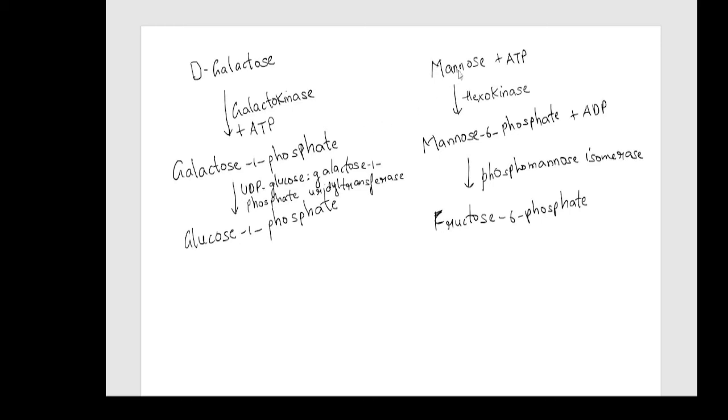Mannose is converted to mannose-6-phosphate by hexokinase and phosphomannose isomerase enzyme converts mannose-6-phosphate to fructose-6-phosphate which can again enter into glycolysis.